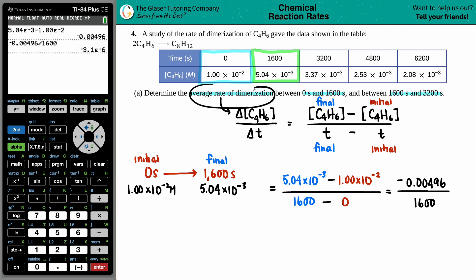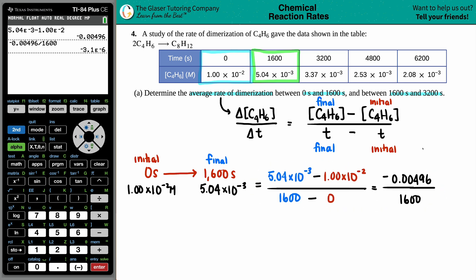So we have the average rate of dimerization for the 0 to 1,600. And maybe what I'll do is, I'm going to bring this a little bit closer. We'll do it down here. So 3.1 times 10 to the negative 6. Negative. Let me just write this over. Negative 3.1 times 10 to the negative 6. And just know that the unit is molarity over seconds. Because molarity on top, seconds on the bottom. Molarity over seconds. You can't cancel those two units out. So that would be the first rate.